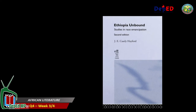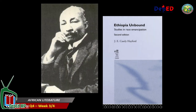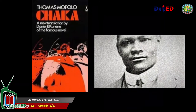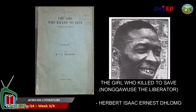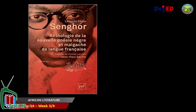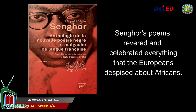Here are some African literary creations during the colonial period. Ethiopia Unbound: Studies in Race Emancipation, written in 1911, was the first African novel written in English by Joseph Ephraim Casely Hayford. Shaka was a historical novel authored by Thomas Mofolo in 1925. The Girl Who Killed to Save — Nongqawuse the Liberator — was a play based on a true story written by Herbert Isaac Ernest Dhlomo in 1935. The anthology of New Negro and Malagasy Poetry in the French Language was authored by Leopold Sédar Senghor in 1948, with poems that revered and celebrated everything the Europeans despised about Africa — the color of their skin, their hair, and their ways of living, which were called barbaric by the whites.